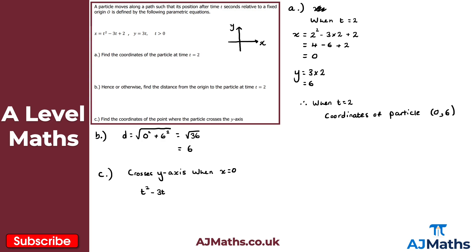Setting x equals 0 gives us t squared minus 3t plus 2 equals 0. We need to solve for t. This factorises into double brackets: (t minus 2)(t minus 1) equals 0, giving two values: t equals 2 and t equals 1.